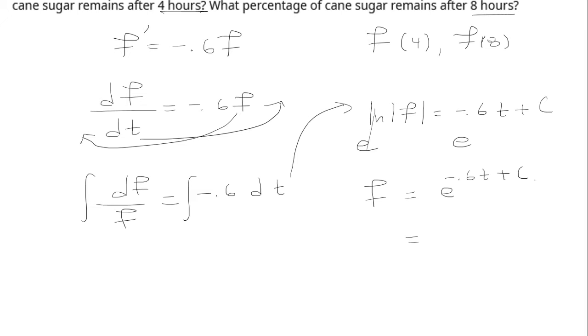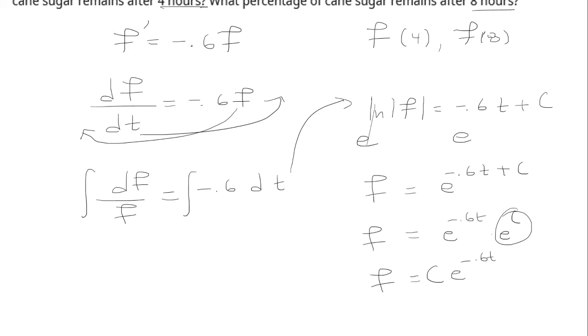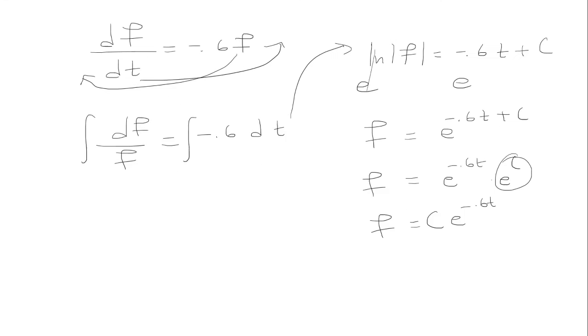So the constant now, we can break this up as e to the c. And so this is just a constant, right? E to a constant is just a constant, so we'll call it c, e to negative 0.6t. So this is my solution to the differential equation.